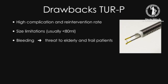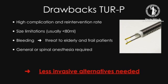Perioperative risks are important, considering the shift towards a more elderly and frail patient population, often managed by anticoagulant and antithrombotic agents. TURP can only be performed under general or spinal anesthesia, unless invasive treatment alternatives are needed.